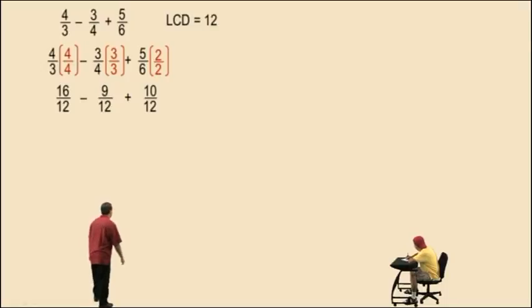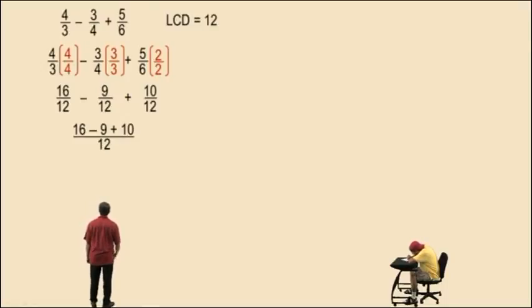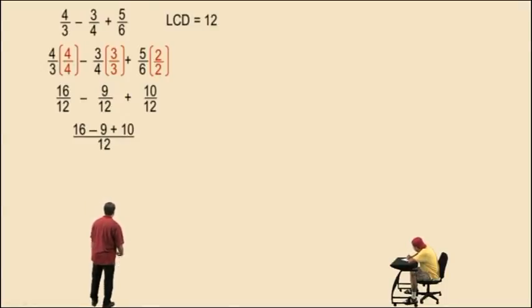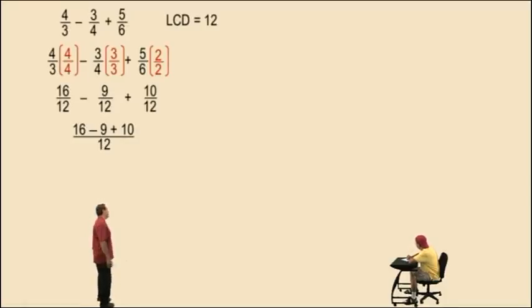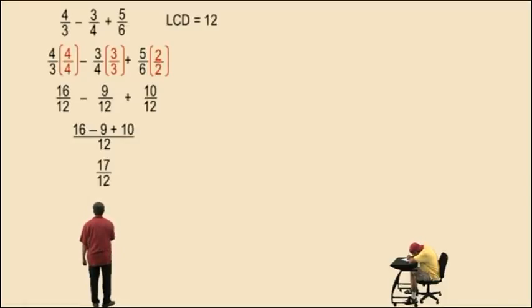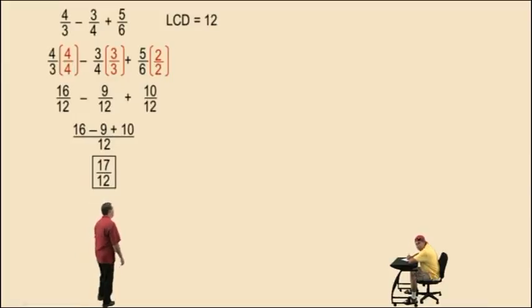All our denominators are the same, so we work with our numerators. Our denominator remains unchanged, so we have 16 subtract 9 plus 10 in our numerator over 12, and so our answer is 17 over 12. Don't forget to circle or box your answer. Oh, what fun!